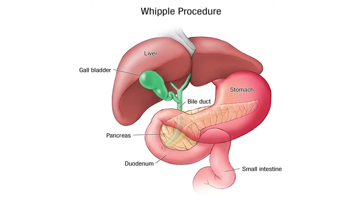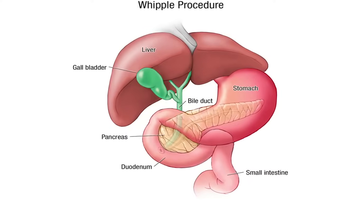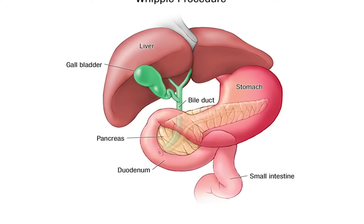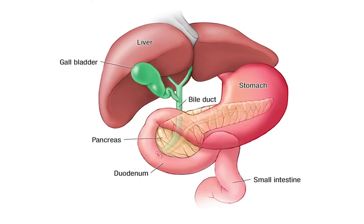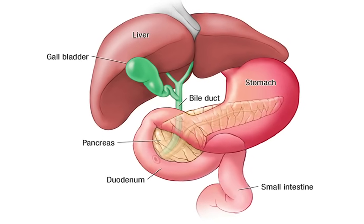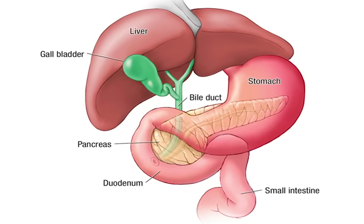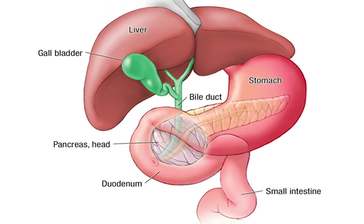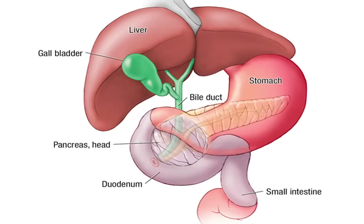As we discussed, the Whipple procedure, or pancreaticoduodenectomy, is a very complex procedure. That is because we need to take the head of the pancreas out. The head of the pancreas has a very intrinsic relation with the intestine — the first part that we call the duodenum — as well as with the bile duct.